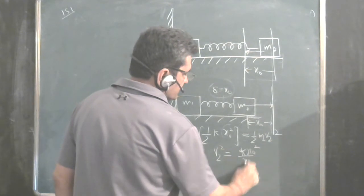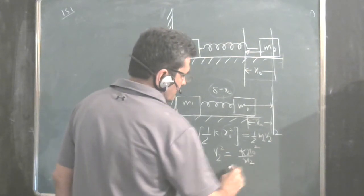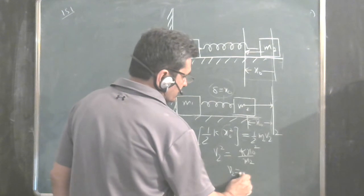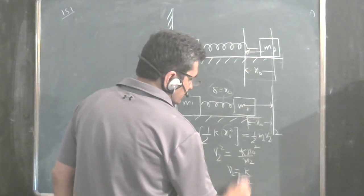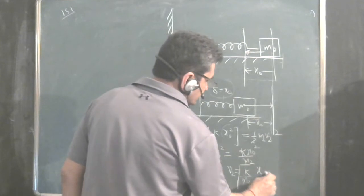Or V2 at that point of time is k upon M2 square root into x0.